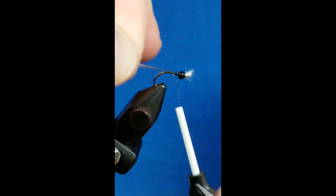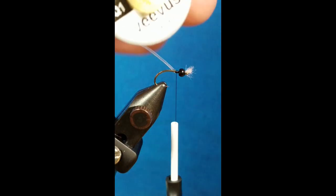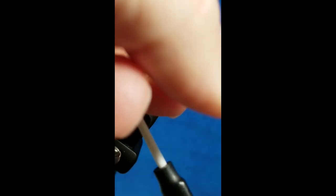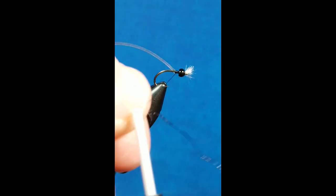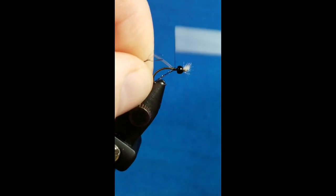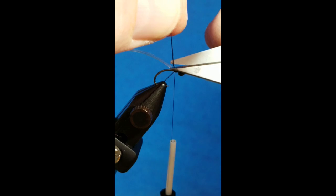Once I have that attached, bring in Veevus body quill, and this is black. I'm just going to take the end of the strand, fold it over the thread, and slide it straight down to the hook shank. Once I get it in place, I want to take about two or three wraps over the material, and then I'm just going to let that bobbin hang there. Cut the excess material.